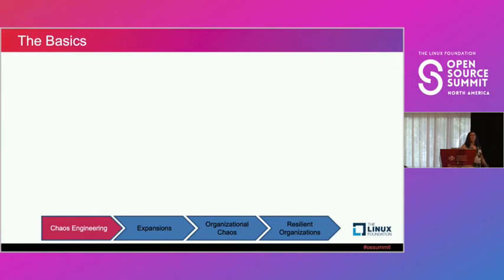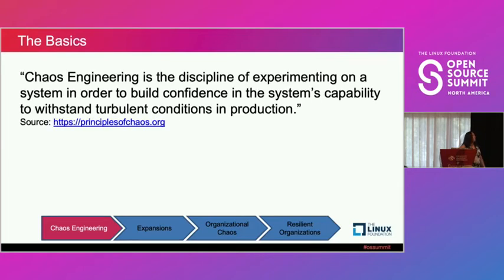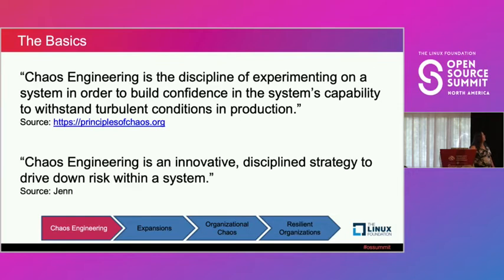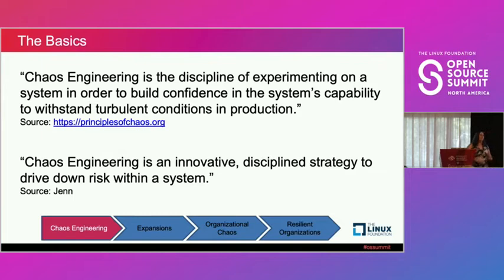Quick summary: what is chaos engineering? A couple of key quotes from principles of chaos.org — chaos engineering is the discipline of experimenting on a system in order to build confidence in the system's capability to withstand turbulent conditions in production. I like to simplify it: it's an innovative discipline and strategy to drive down risk within a system, and that system can be hardware, software, security, or personnel.